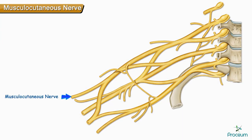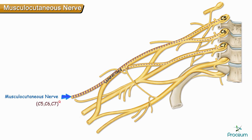Musculocutaneous nerve is a branch of the lateral cord of the brachial plexus. The root value is C5, C6, and C7.